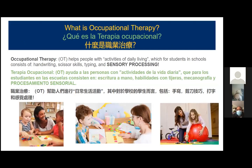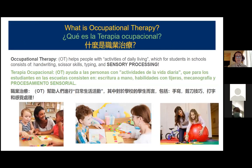Our first slide is: what is occupational therapy? Occupational therapy, or OT, is a practice that helps people with activities of daily living. As an OT, I can work in many different settings — obviously schools is one place, and we can also work in hospitals. When we say activities of daily living for students in schools, we mean activities students have to do every day, like handwriting, scissor skills, and typing. We also look at sensory processing, which is going to be a big part of our presentation tonight.